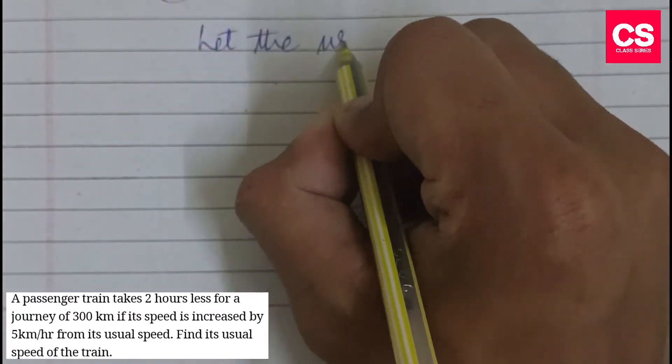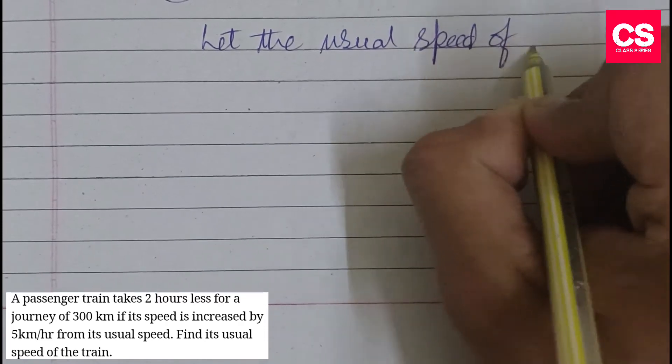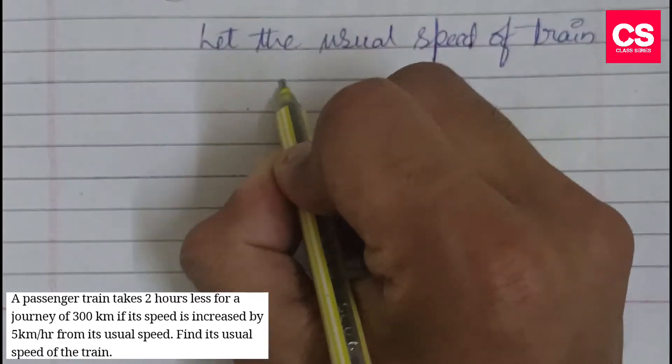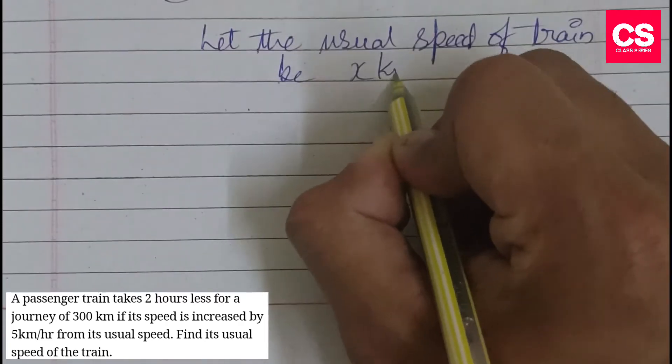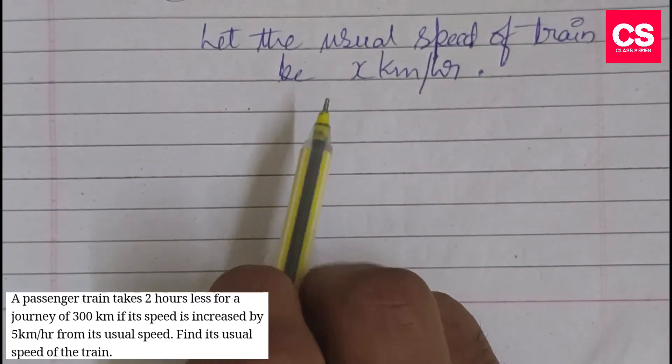Let the usual speed of the train be x km per hour. Now let us find out.